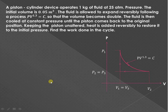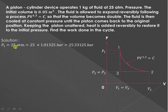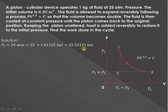We can show the different processes: first is the polytropic expansion process, then a constant pressure process, and then the constant volume process. The pressure is given as 25 atmospheres; converting to bar using 1 atm = 1.01325 bar, and then converting bar to kPa using 1 bar = 10² kPa.